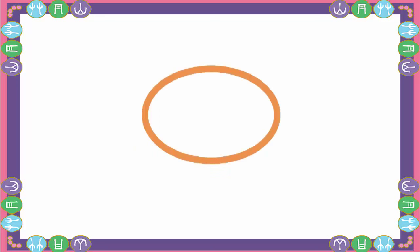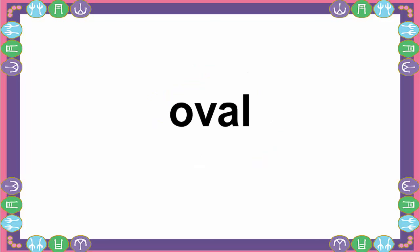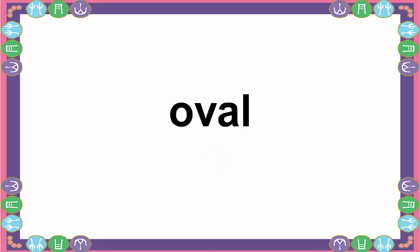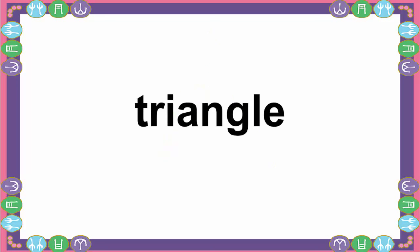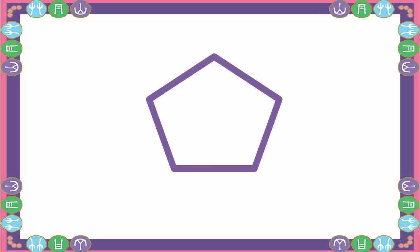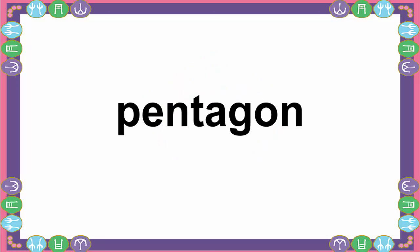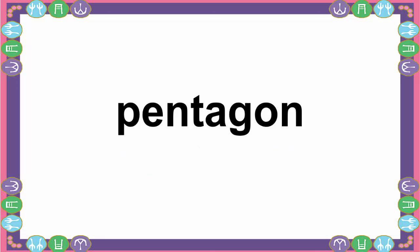What shape is this? Oval. What shape is this? Triangle. What shape is this? Pentagon. What shape is this? Hexagon.